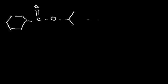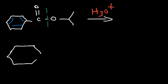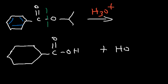Let's try another example. If we have an ester that looks like this, what are the products of this reaction? You want to cleave this bond. On the left side we're going to get benzoic acid, and on the right side isopropyl alcohol, which is the side product.